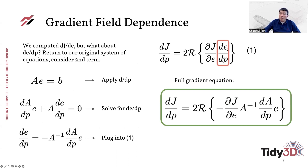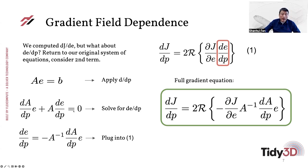One can also compute the derivative of the electric field with respect to the control parameter. You take the original linear system equation and take the derivative with respect to the parameter on either side. Assuming the excitation source doesn't depend on these parameters, the right-hand side is zero, and the left-hand side yields two terms. What we care about is the derivative of the field to the parameter, and formally you can write it as the inverse of the system matrix times something on the right-hand side. Plugging this back in gives the entire gradient information as a formula.